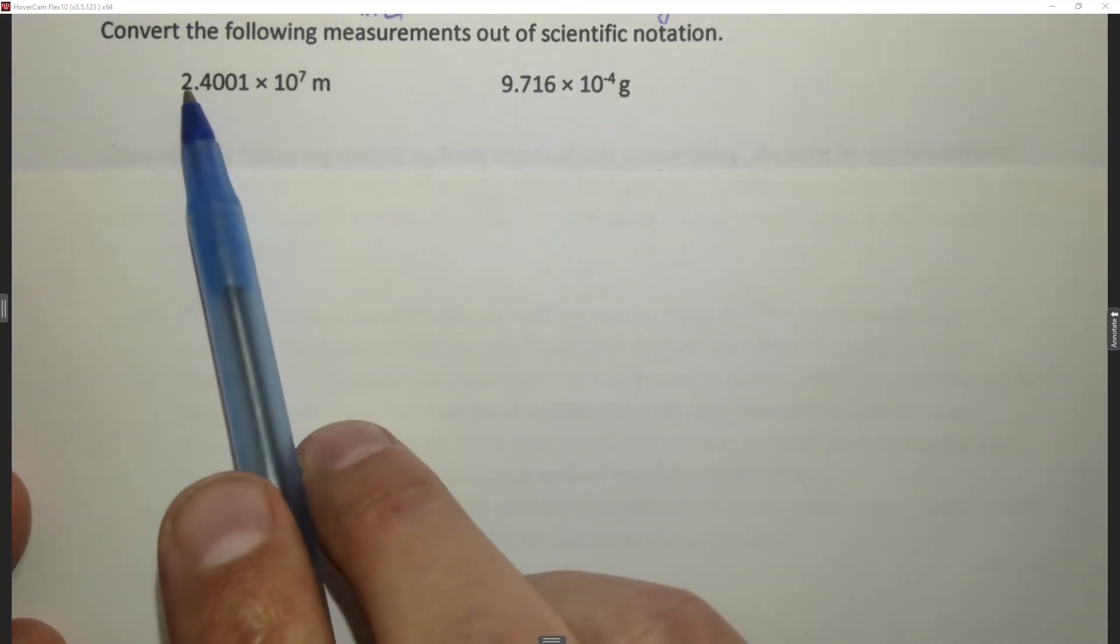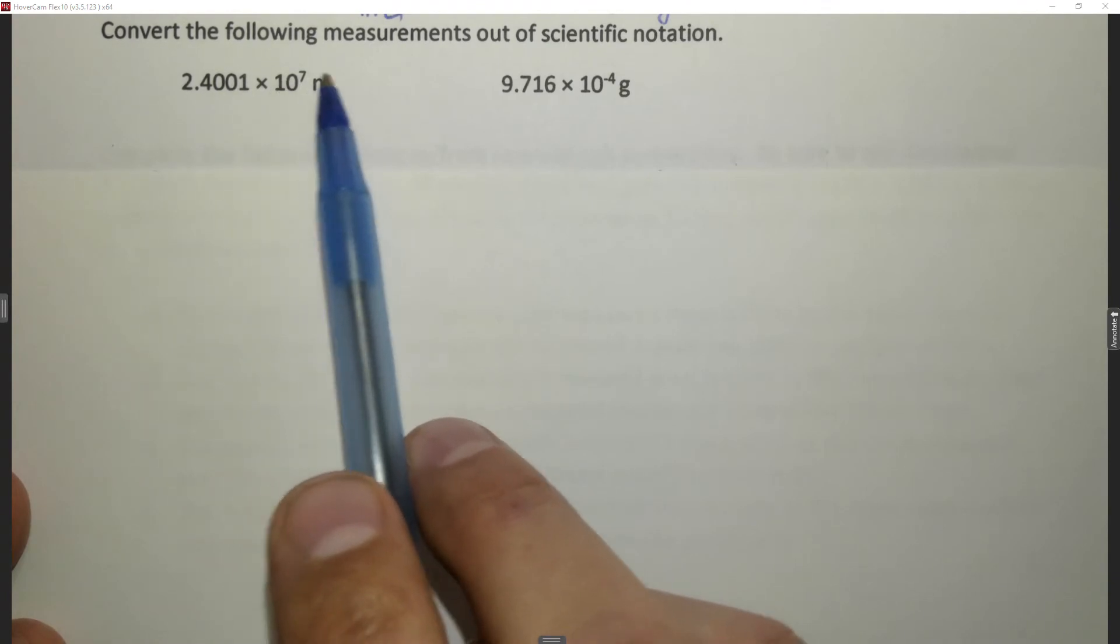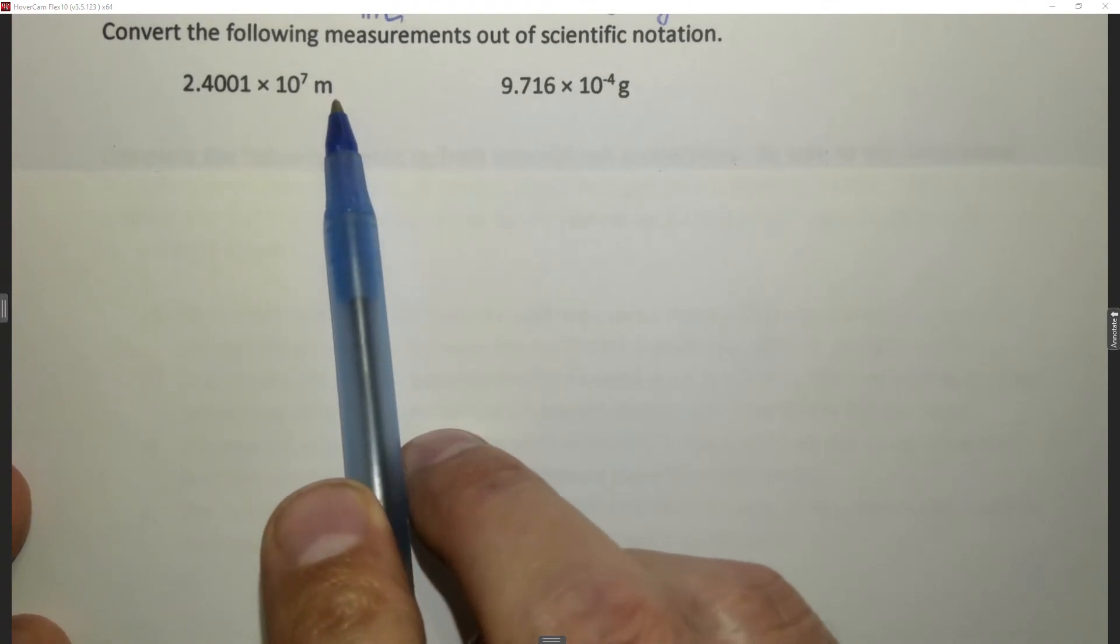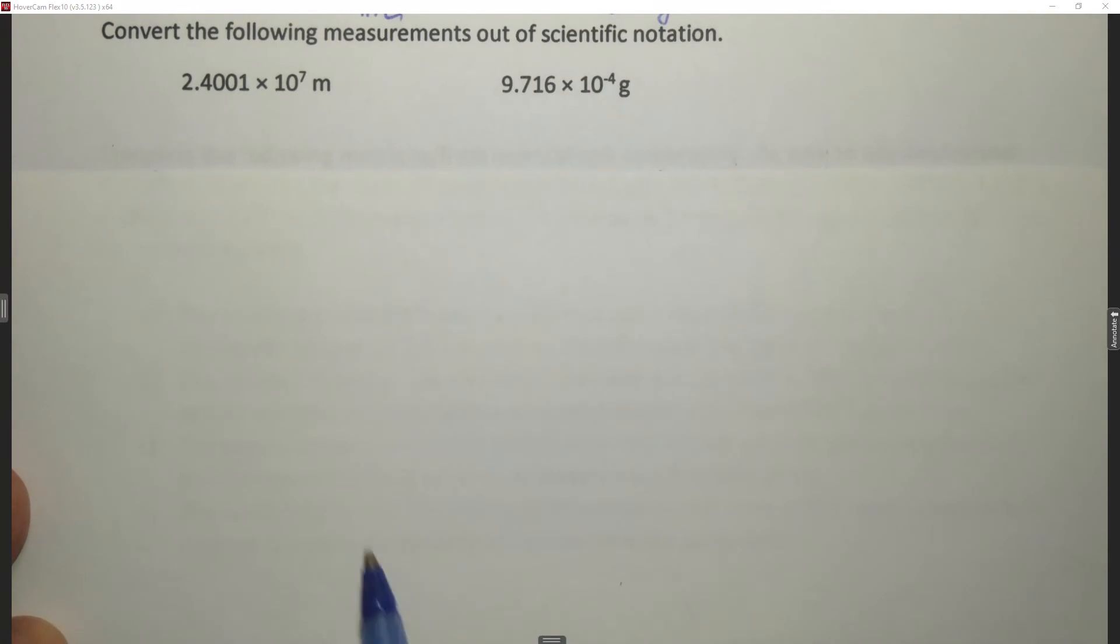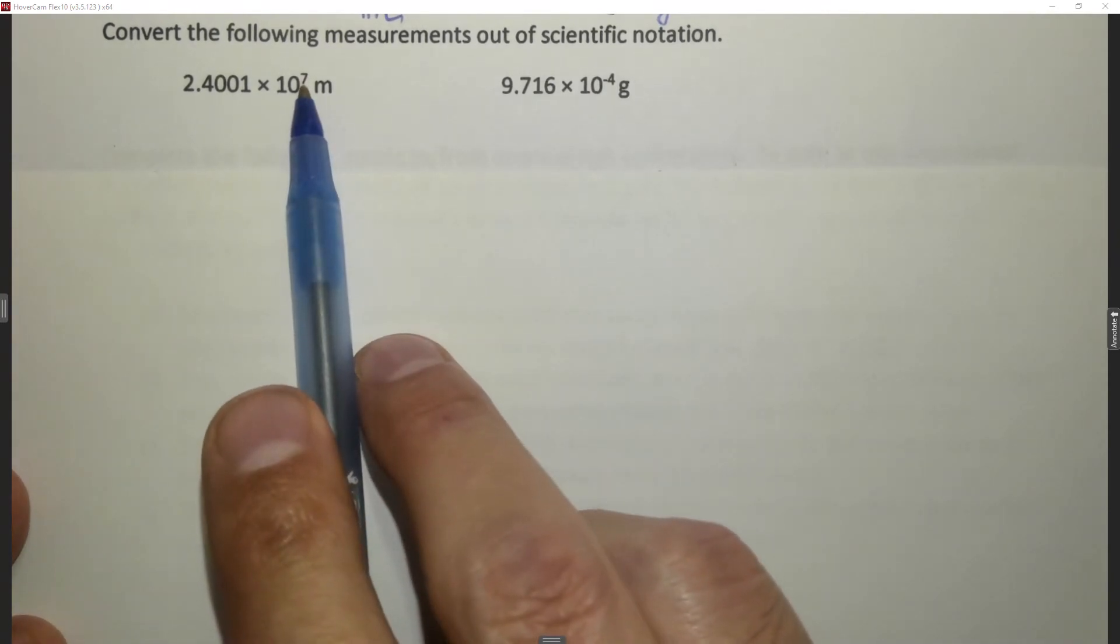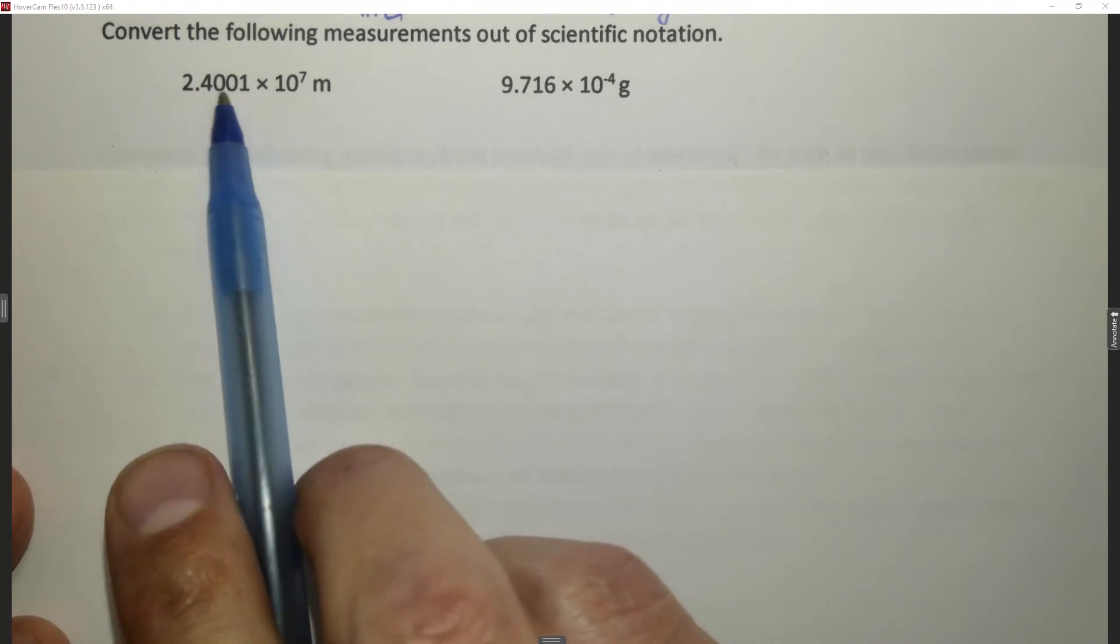In this case we have 2.4001 times 10 to the 7 meters and we want to convert it out of scientific notation. Well since this is a positive number, the exponent, we want to make this bigger than 1.